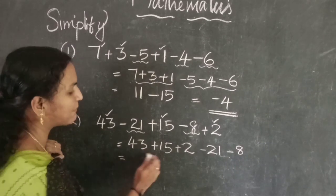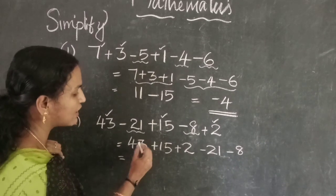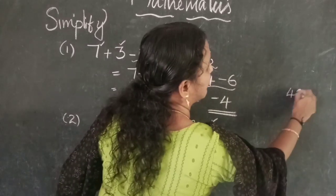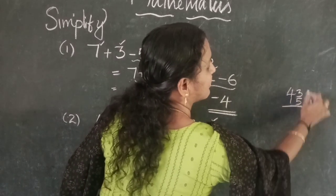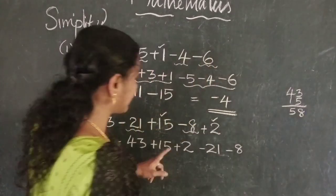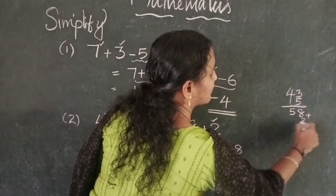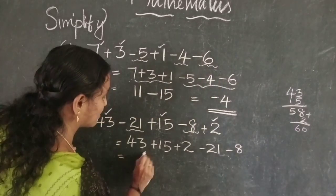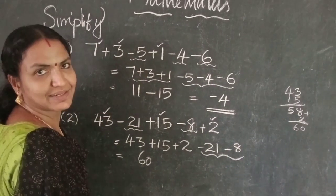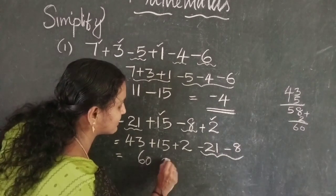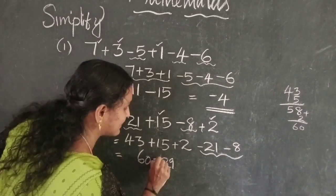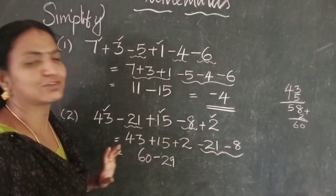Add the positive numbers: 43 plus 50 is 93, plus 2 is 95. Then add the negative numbers: 21 plus 8 is 29, so minus 29. Now we have 95 minus 29.